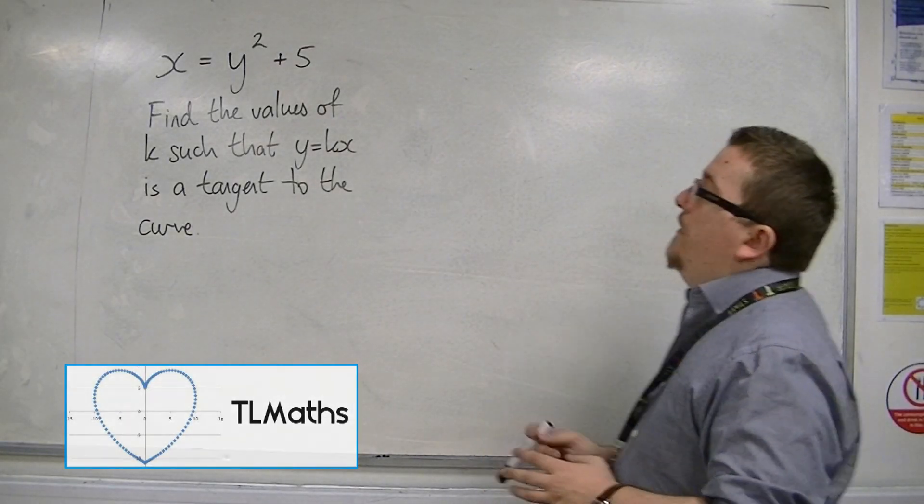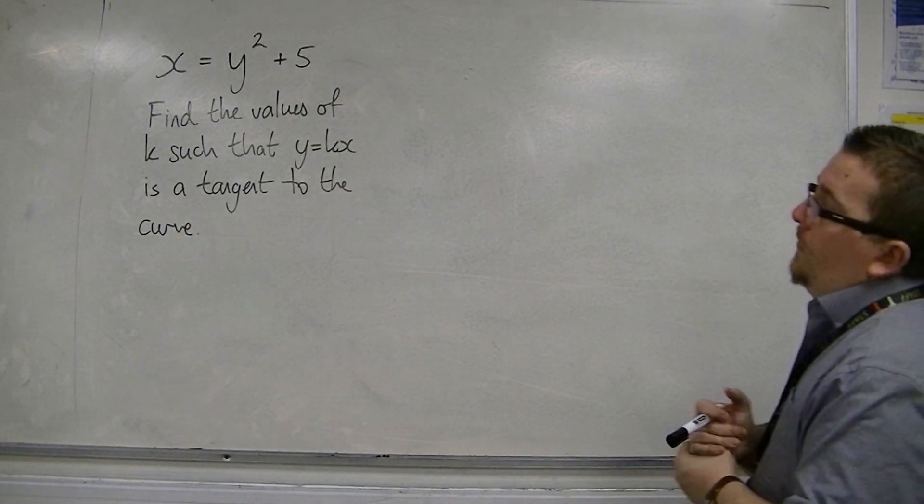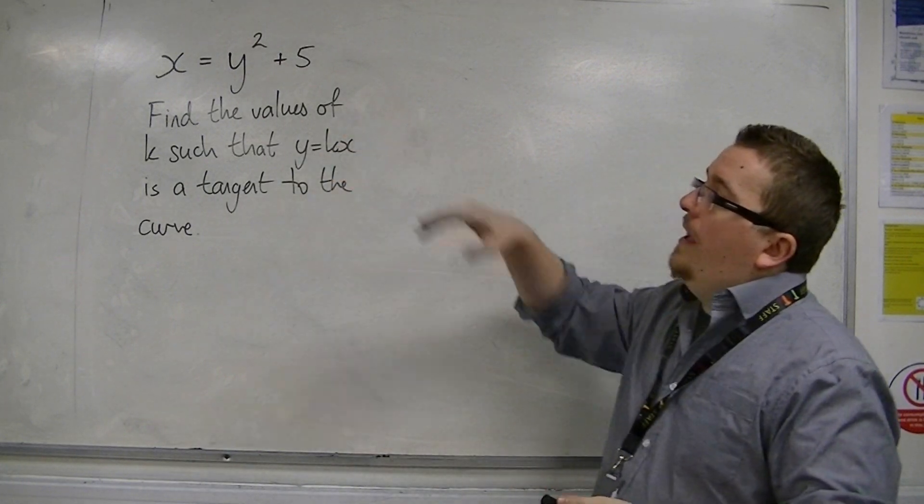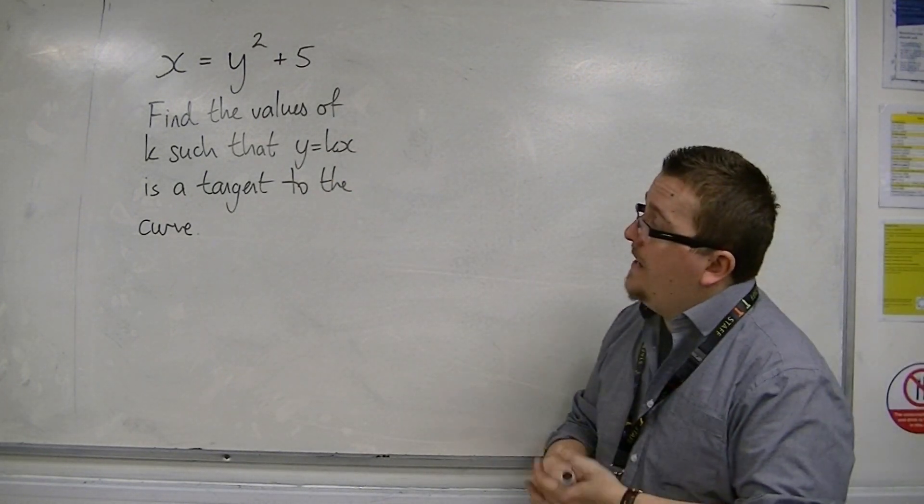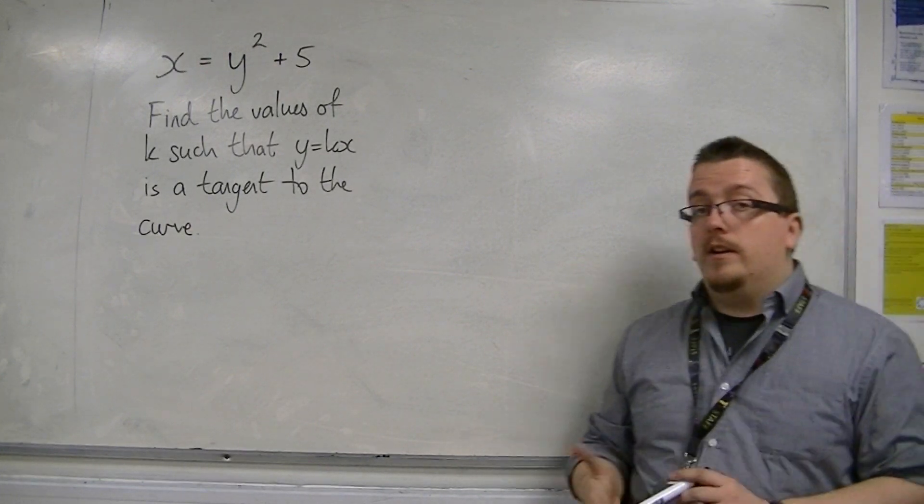OK. In this video, we're going to be looking at a very specific problem. We've got the parabola x equals y squared plus 5, and we want to find the values of k such that y equals kx is a tangent to the curve.